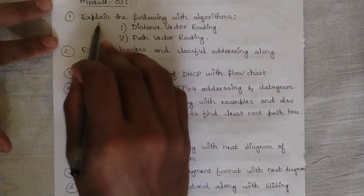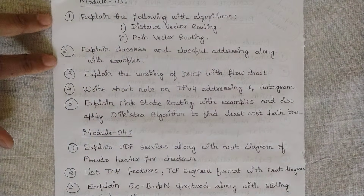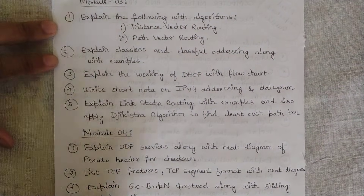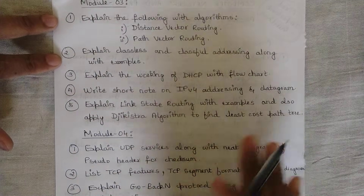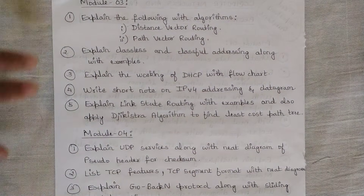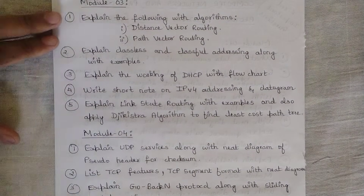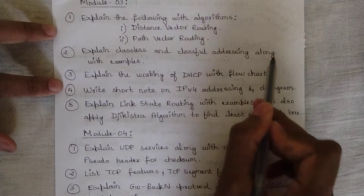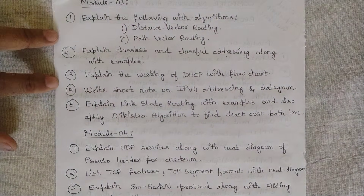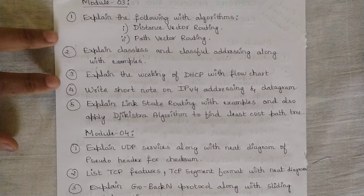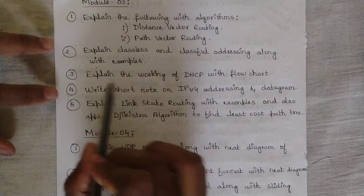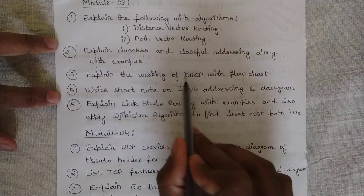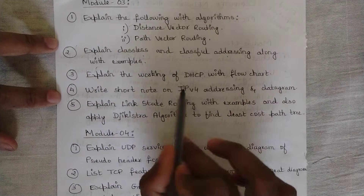The first question from Module 3 is definite: one question on either distance vector routing or path vector routing will definitely be asked — either in the first or second part of Module 3. I've done separate videos on these — they're easy, please learn them. The second question is: 'Explain classless and classful addressing along with examples.' I've covered this in one of my videos as well — very important, please go through it.